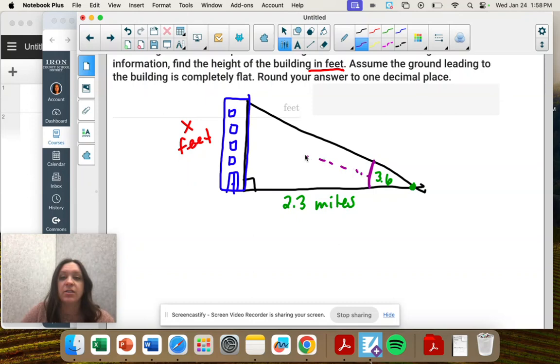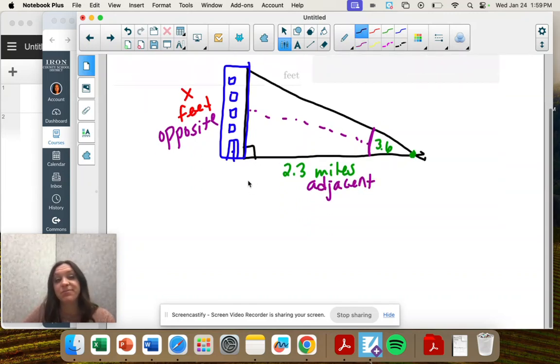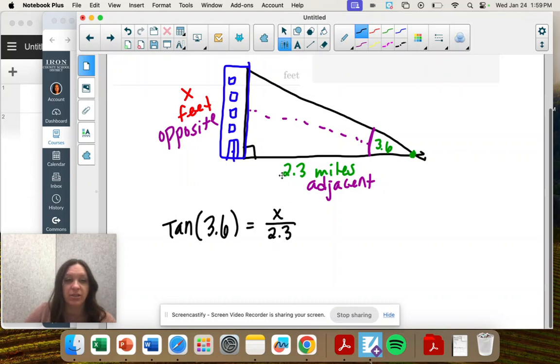So across from our angle is the opposite side. And we're given the adjacent side. So are we going to use sine, cosine, or tangent? Tangent. We've used tangent every time so far. So tangent of our angle equals opposite over adjacent.